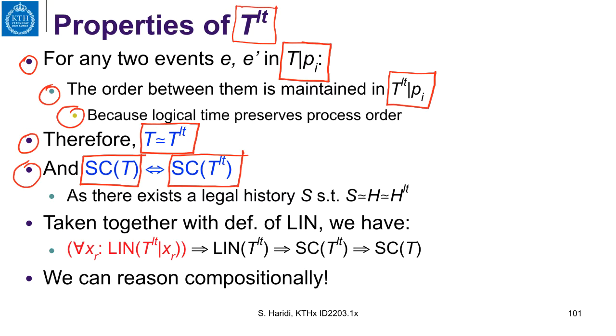Why is that? Because one is sequentially consistent if there exists a legal history, and we know that whatever legal history you get, you get equivalence between the two traces.